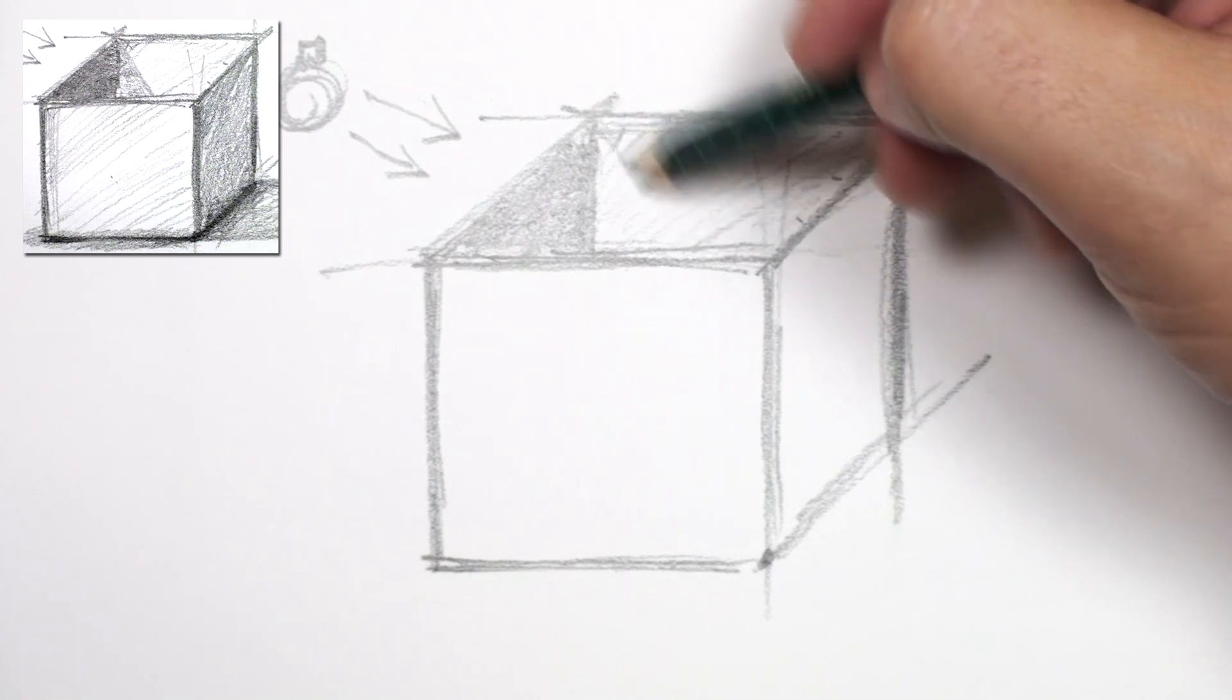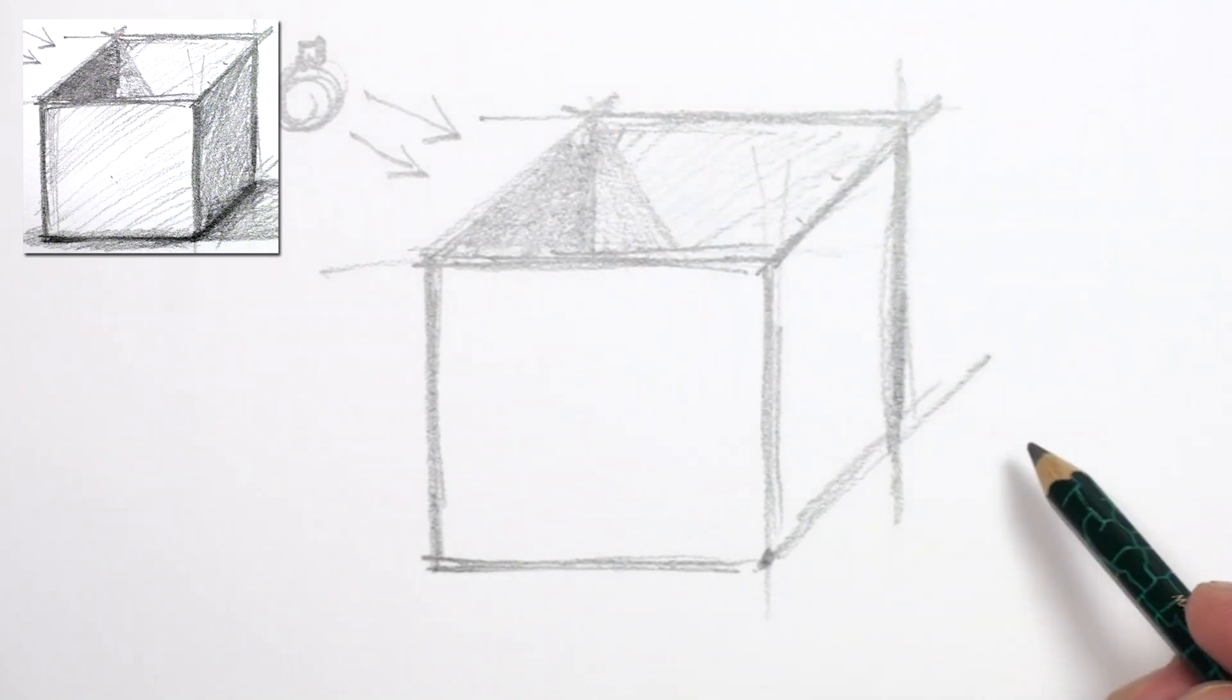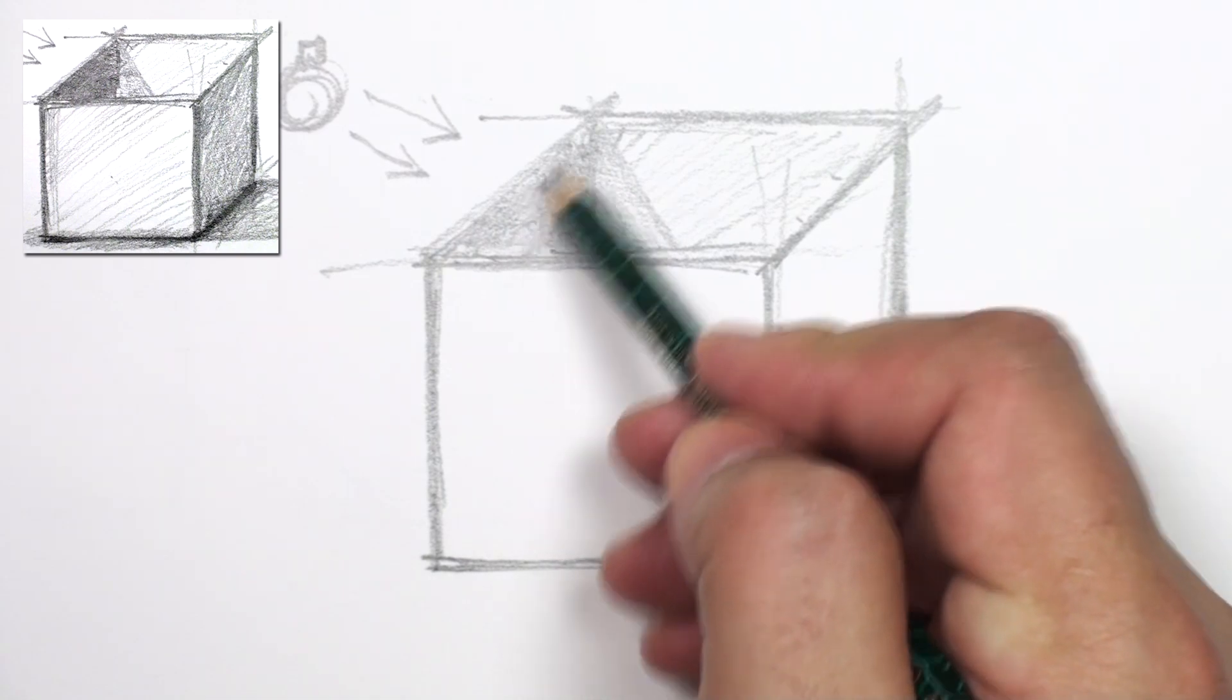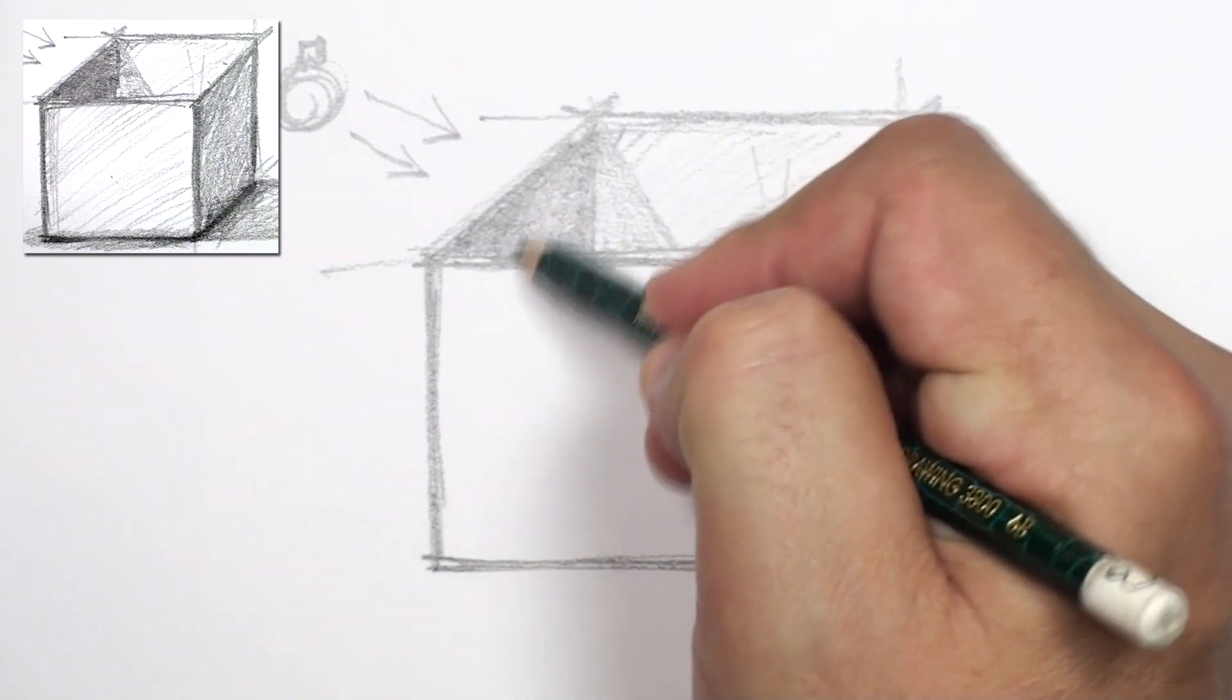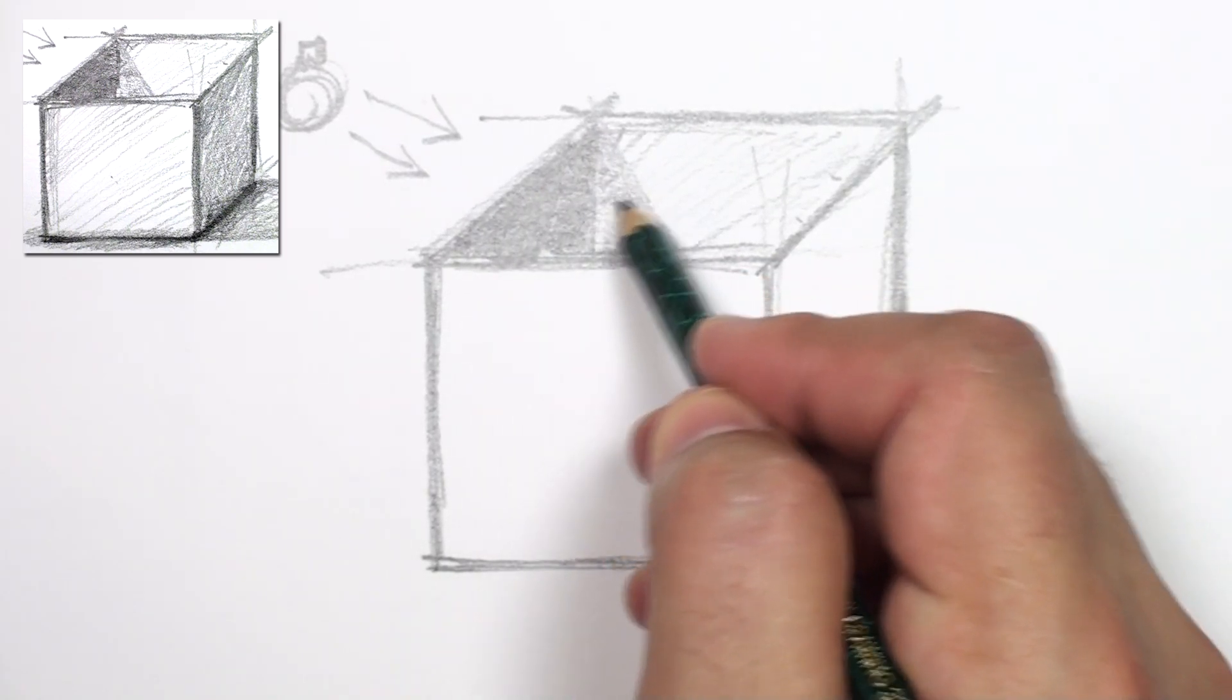But this edge will also cast a shadow on this side of the box. So let's go ahead and darken that up a bit. And then we've got our shadow right there.